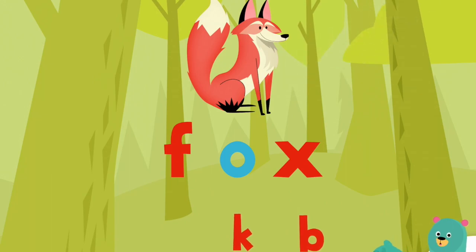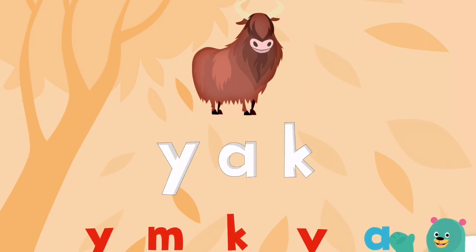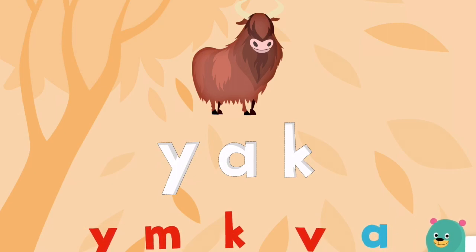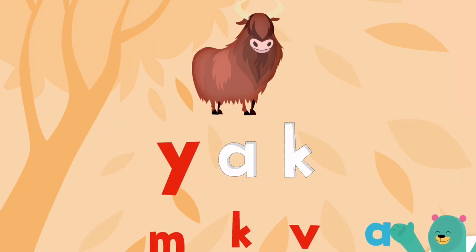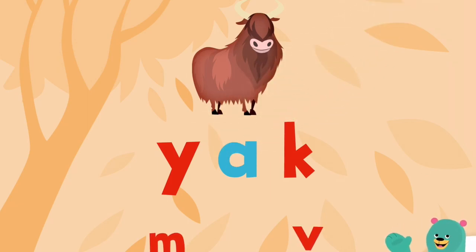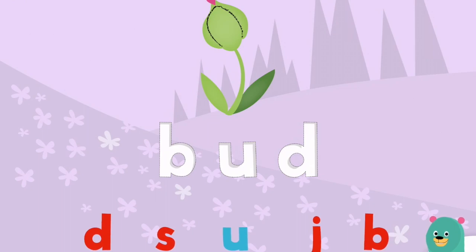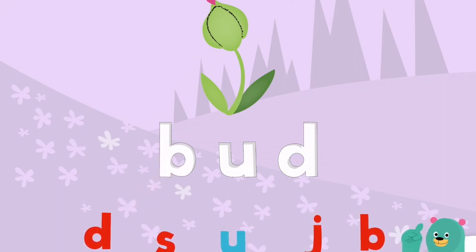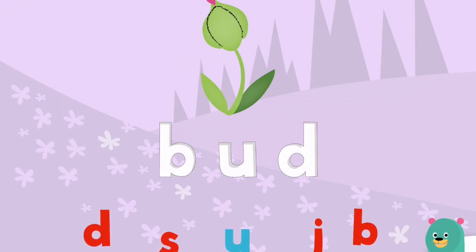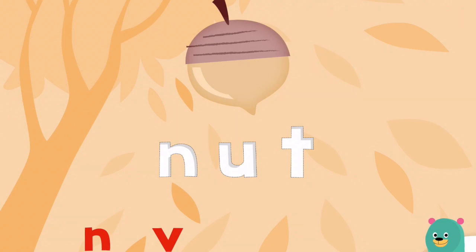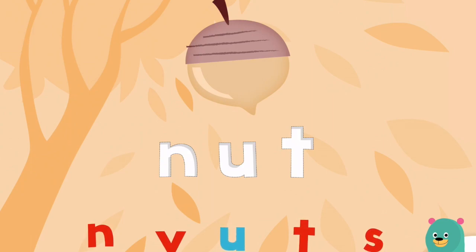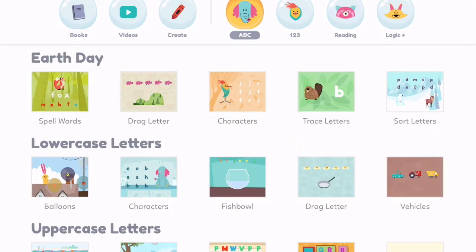It shows the word 'fox' — they're seeing the picture. Then 'drag the letters to spell the word yak' — they're seeing the picture and the word, and the little icon in the bottom right corner verbally says the direction: Y-A-K, 'great, you spelled the word yak.' I'll show you what it's like when you don't get it correctly — it says 'think again.' Then: B-U-D, 'awesome, you spelled the word bud.' I like how the icon also praises the student for getting it right.